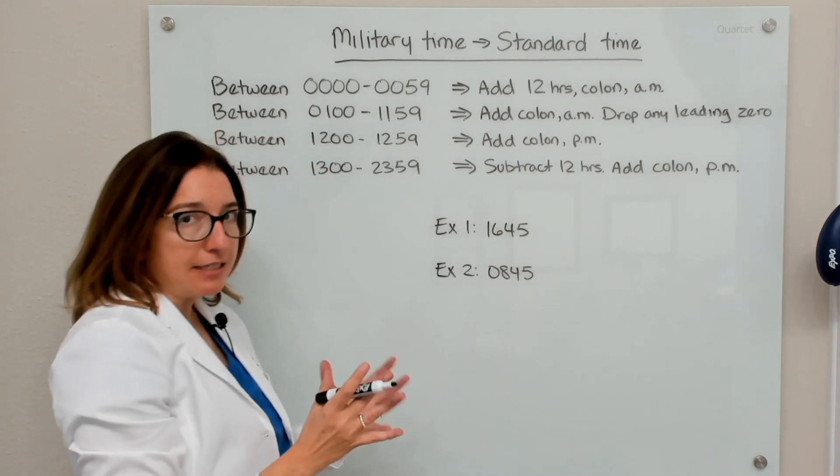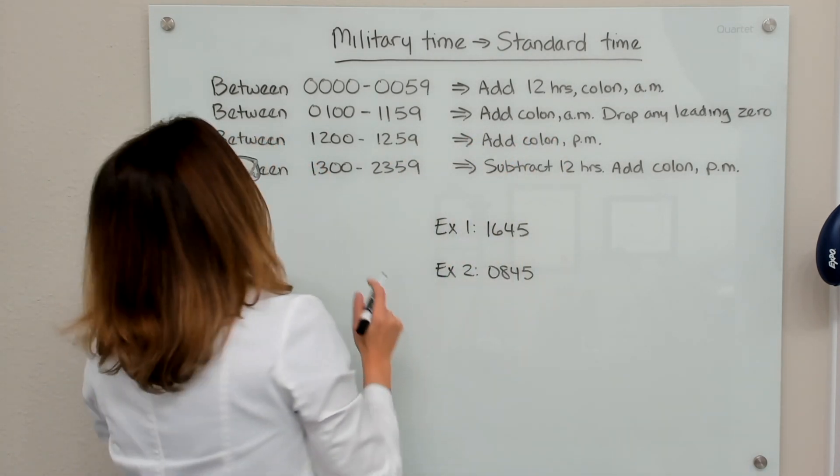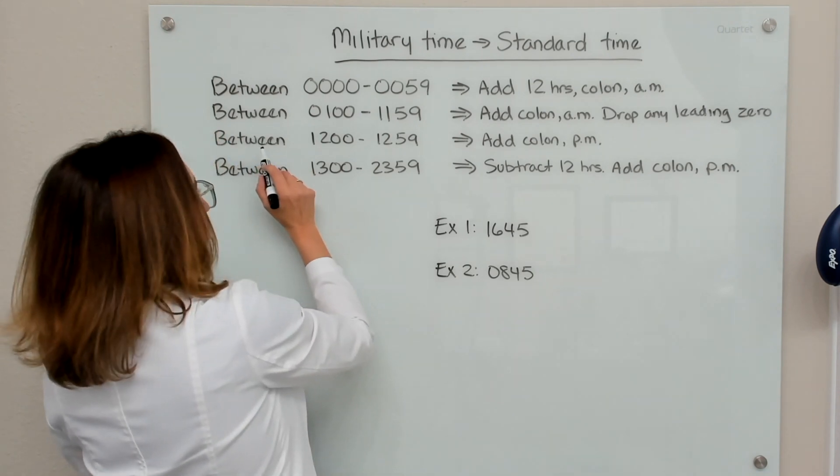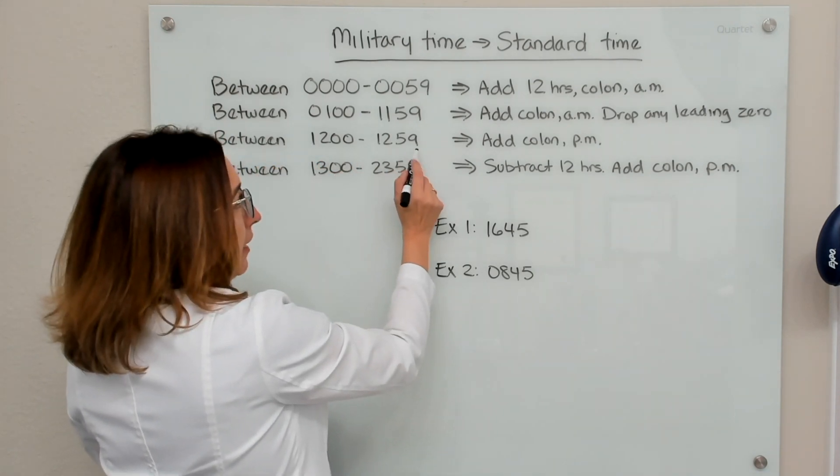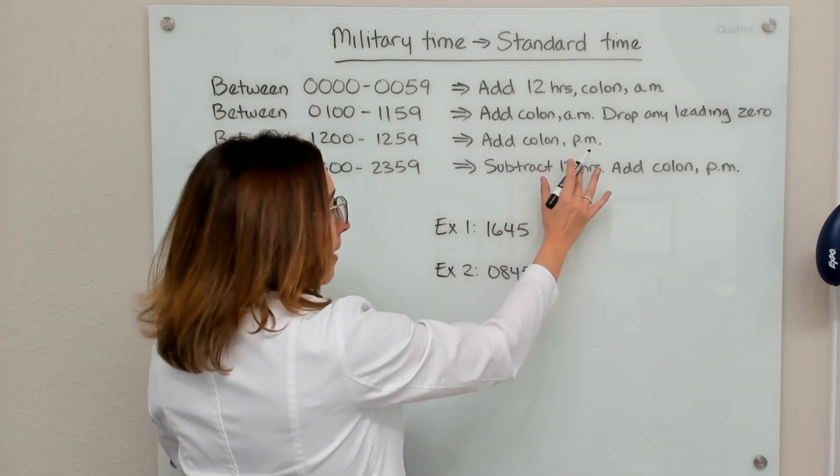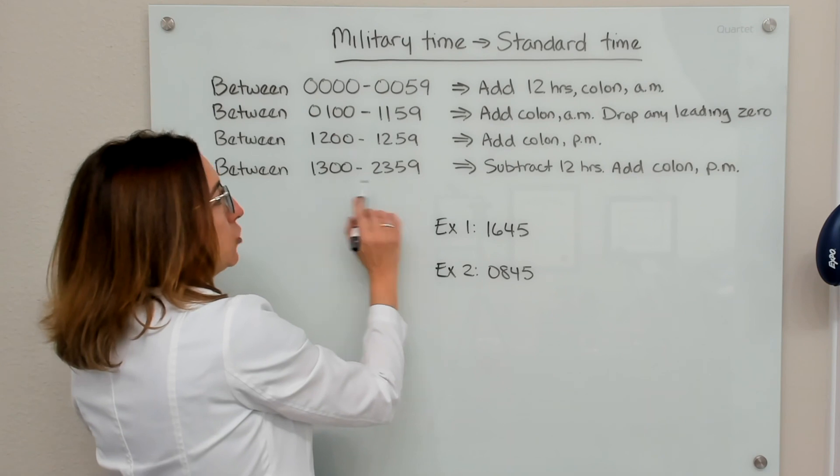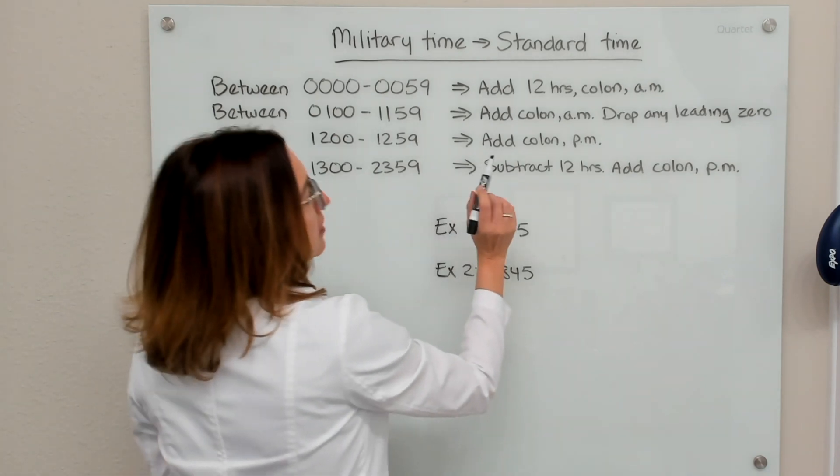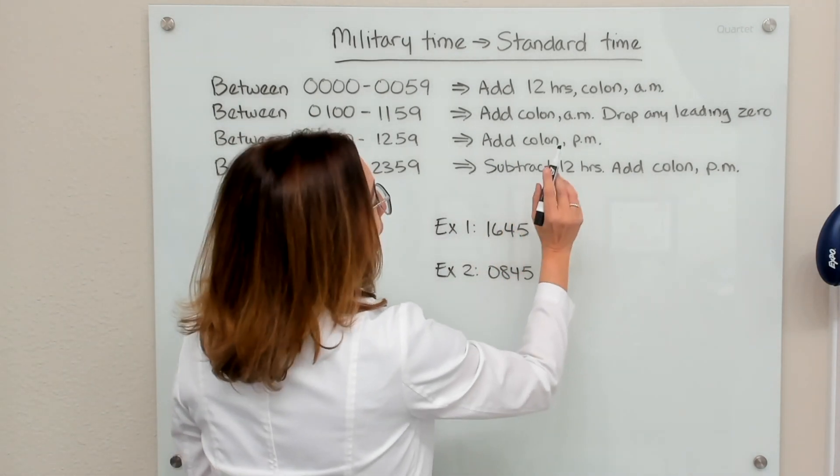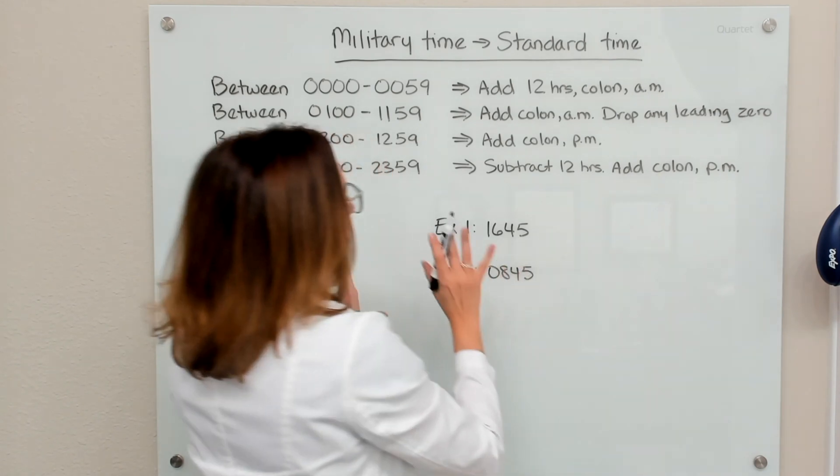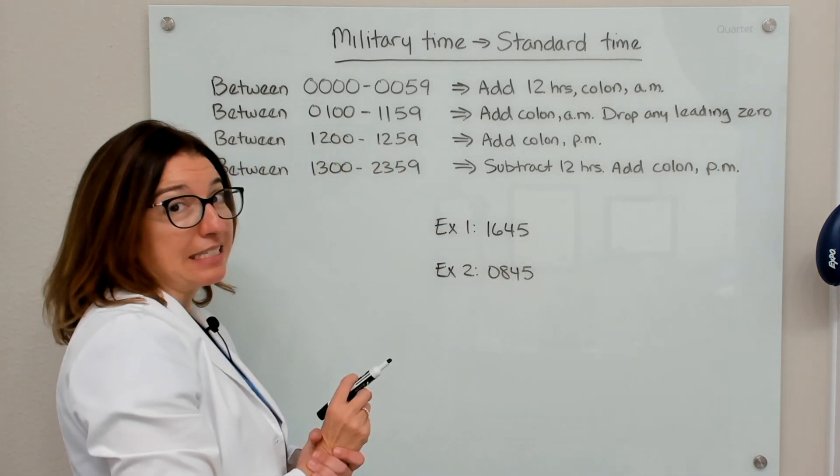And then if we have a military time between 1200 and 1259, we're going to add a colon and p.m. And then for a military time between 1300 and 2359, we're going to subtract 12 hours and then add a colon and p.m. So let's work through a couple of examples.